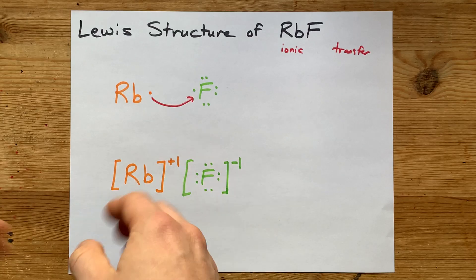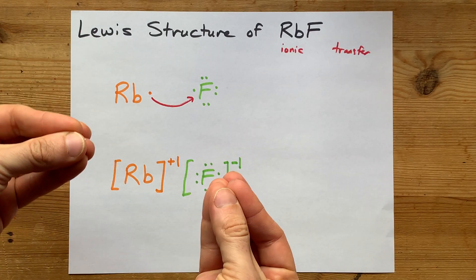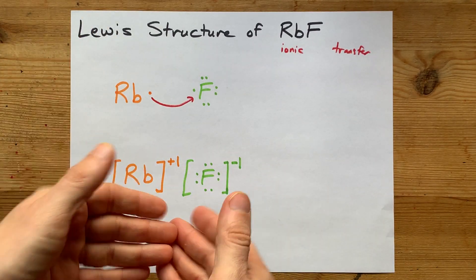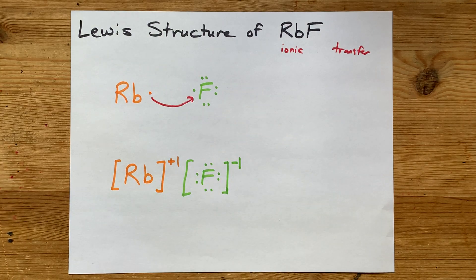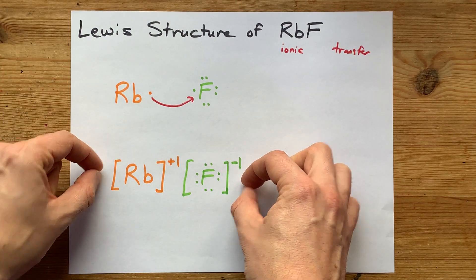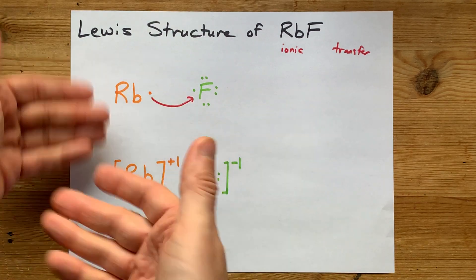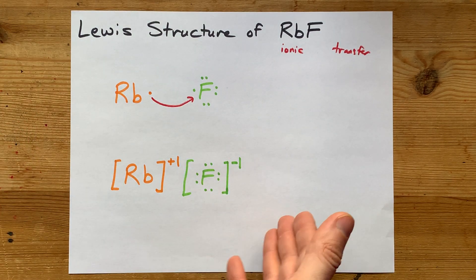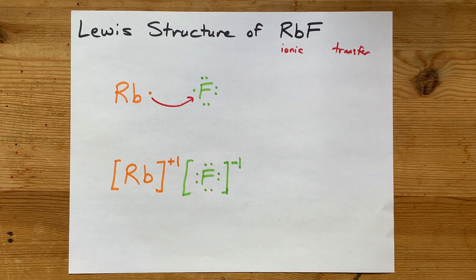This is the ionic Lewis structure for rubidium fluoride. You're done. That's it. Let me be specific. This is the Lewis structure for rubidium fluoride. This is just me motivating how it happens. Thanks for being with me, and best of luck.